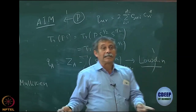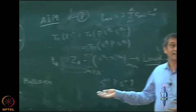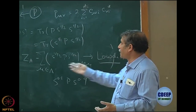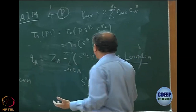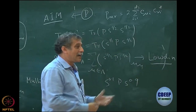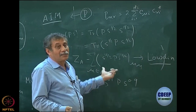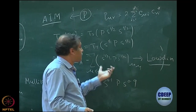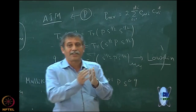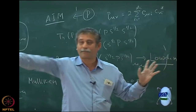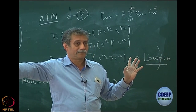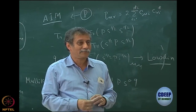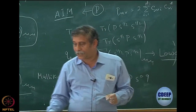P is a key quantity in the AIM picture. P_μν = 2 Σ_{i=1}^{N/2} C_{μi} C*_{νi}, so the diagonal element P_μμ gives the contribution to atomic orbital μ from all molecular orbitals — I am now doing the reverse of expanding a molecular orbital in atomic orbitals. P allows me to do the reverse, and that is why it is so important. As I showed for charge, there is an arbitrariness because of the mathematics, which Löwdin cleverly exploited. I will stop here today.